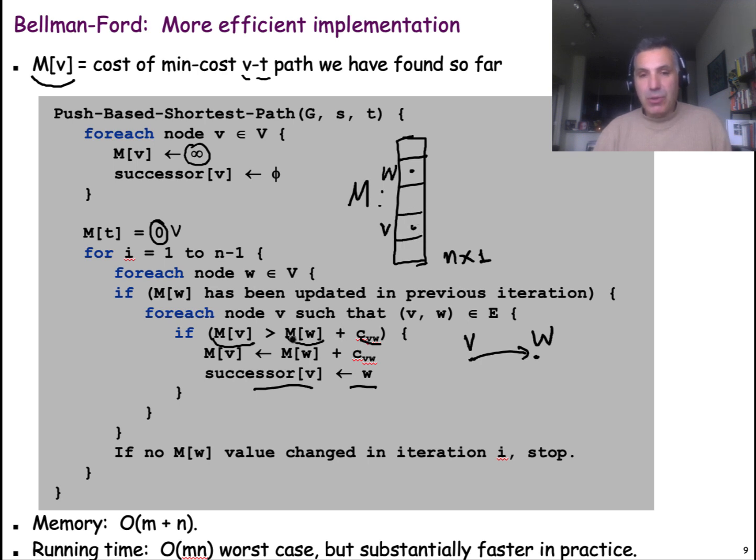Another thing to notice here is that the algorithm can actually terminate prematurely even without all of these values of I if we have reached an iteration in which none of these elements of the column M have been decreased. In that case, if nothing has changed in these elements for an entire iteration, it is certain that nothing will change also in subsequent iterations. And so, we can terminate the execution of the algorithm because we have found actually the minimum cost for every node to the target.